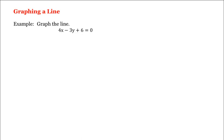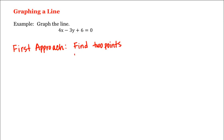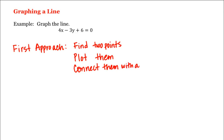Now there are a few different approaches to graphing a line. The first approach is to find two points on the line, plot these points, and then connect them with a straight line. The easiest points to find are the x and y intercepts, if they exist.